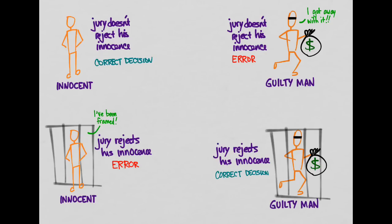In one error case, we rejected the court's initial hypothesis — innocent until proven guilty — when it was actually true. This is called a Type 1 error: rejecting a true hypothesis. In the other error, the court's hypothesis was that he was innocent, but that was wrong — a false null hypothesis — and we did not reject it. Failing to reject a false null hypothesis is called a Type 2 error.